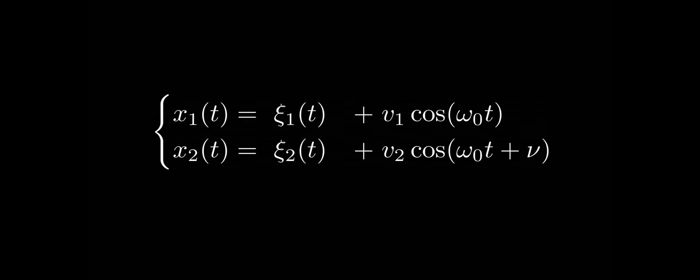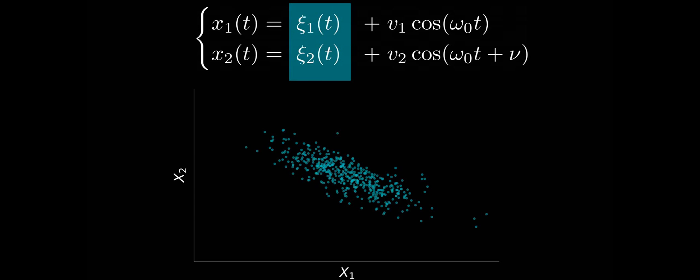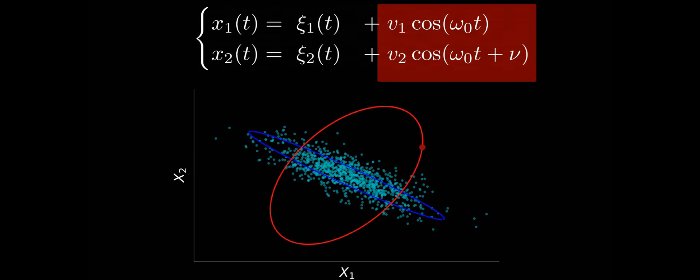Let us illustrate it with a very simple example. Consider this stochastic process that has only two dimensions. This particular process is a mixture of a Gaussian process, where the variables are anticorrelated, that will create the blue points distributed along the ellipsoid. Plus, we're going to add a deterministic signal that oscillates with a periodic frequency omega-sub-zero around the red trajectory. Just to refresh, I will show you the Gaussian process in blue and the deterministic signal in red.